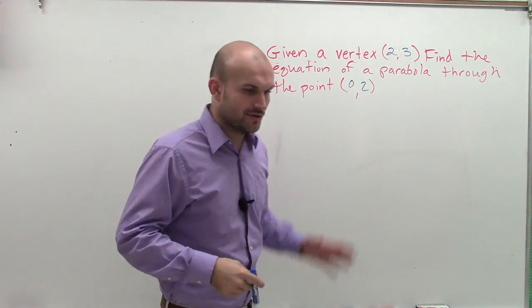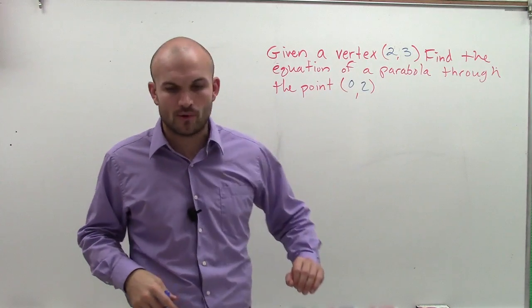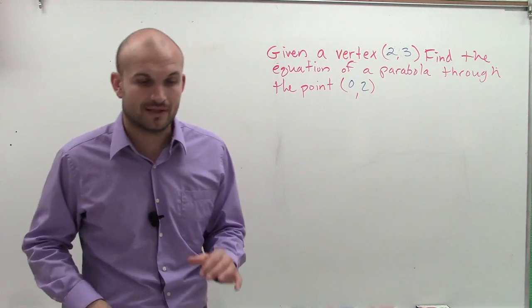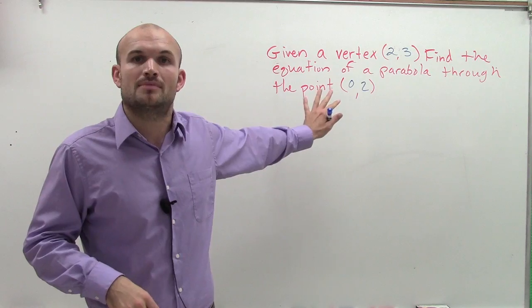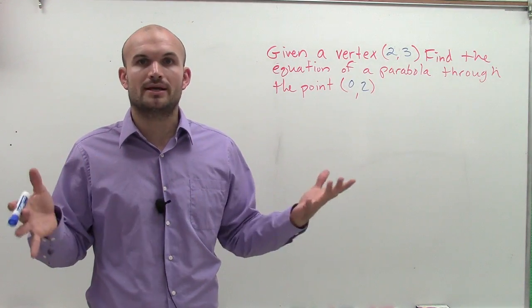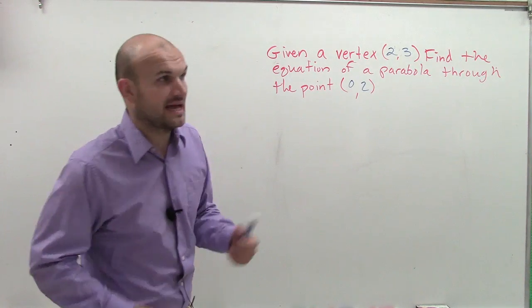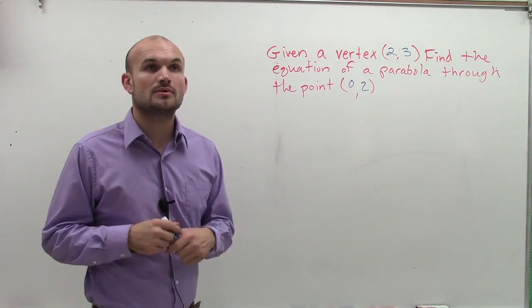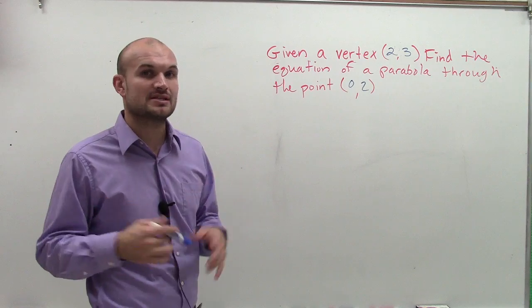So what we need to do is we're given a vertex and we're given a point. And if we want to find the equation of the parabola, I'm sorry, what we need to do is say, all right, well if I want to find the equation of the parabola, first of all, what does the equation of the parabola look like? And I'm going to go through the two equations that we've worked with.